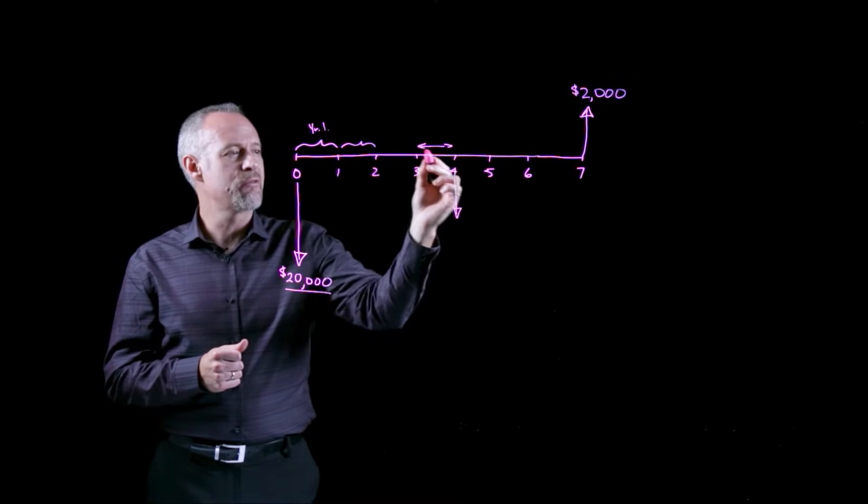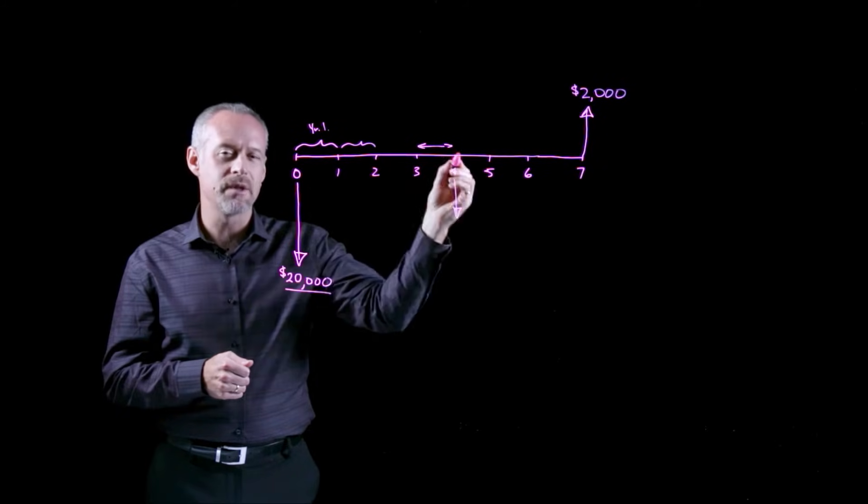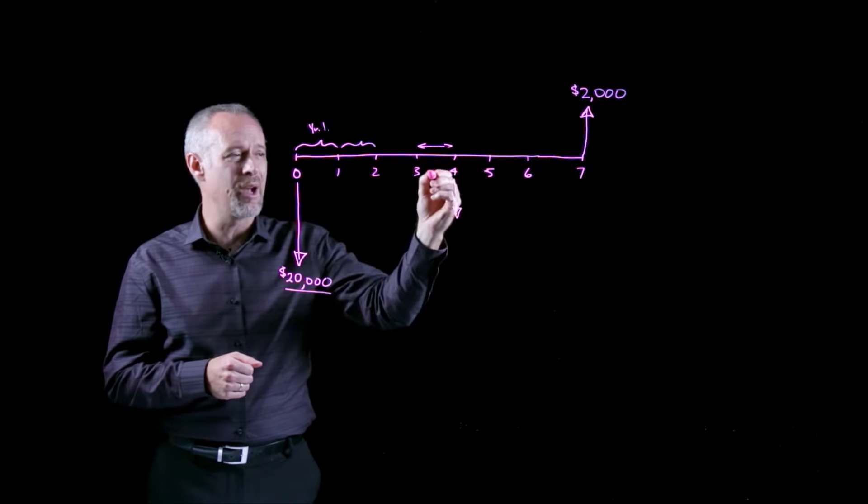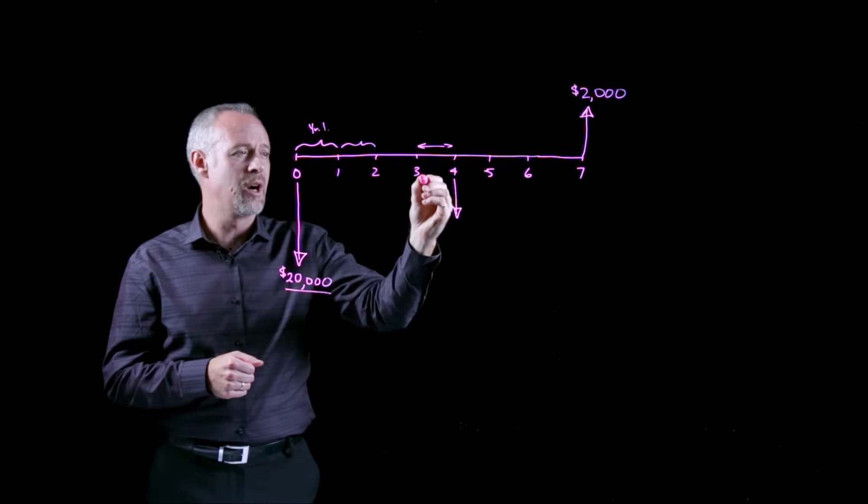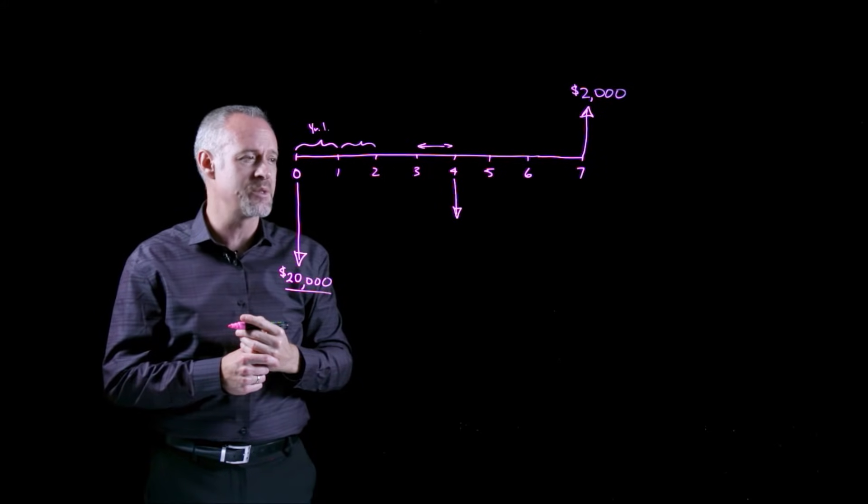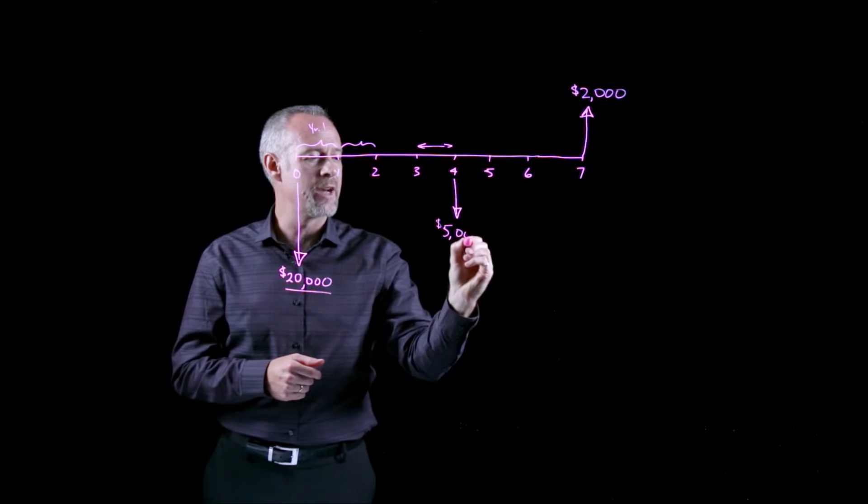But if the time value of money calculations are done with years as the discrete compounding intervals then it actually doesn't matter where in year four that cash flow occurs. I can just put it at the end of the time period and the time value of money calculations end up being the same anyway. So I'll put that five thousand dollar cost that I have to spend at year four.